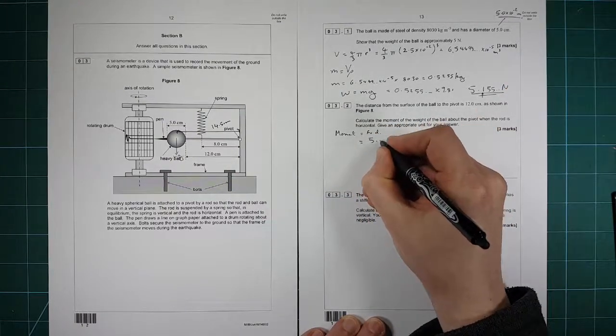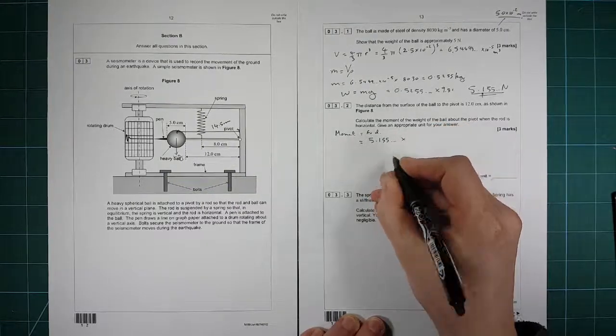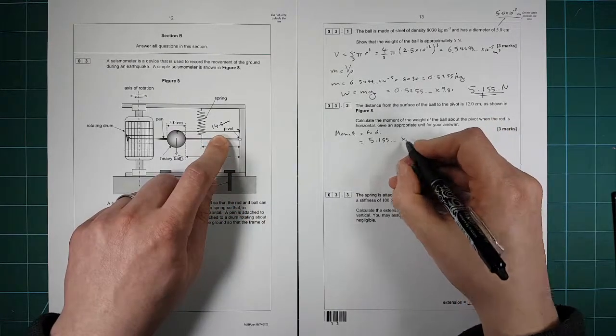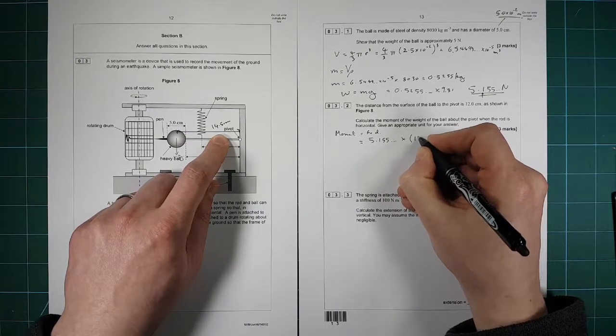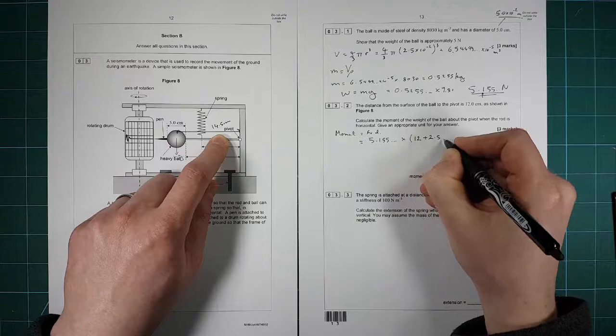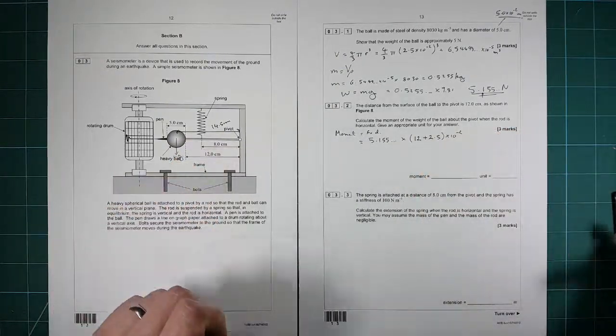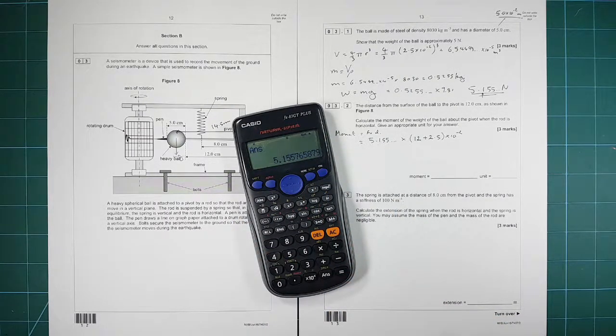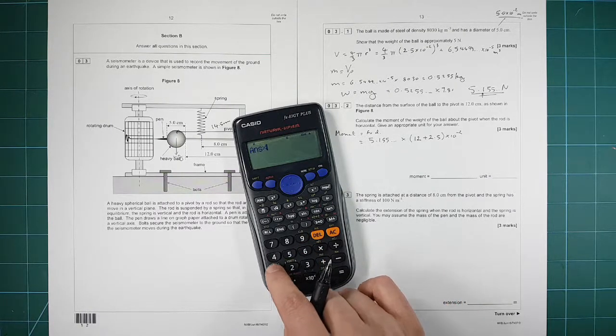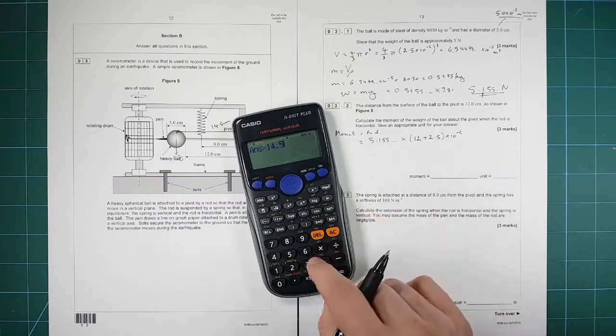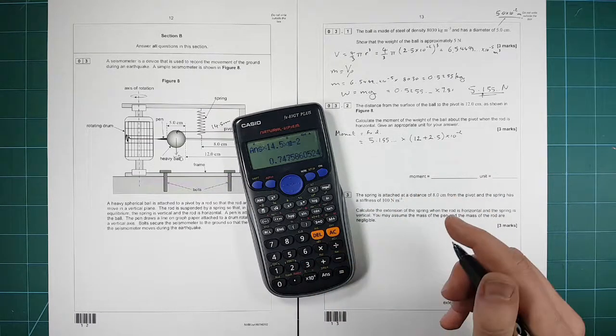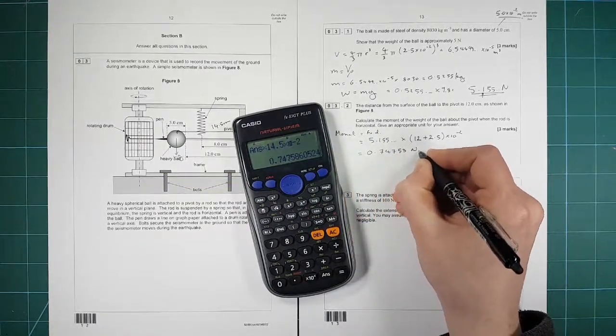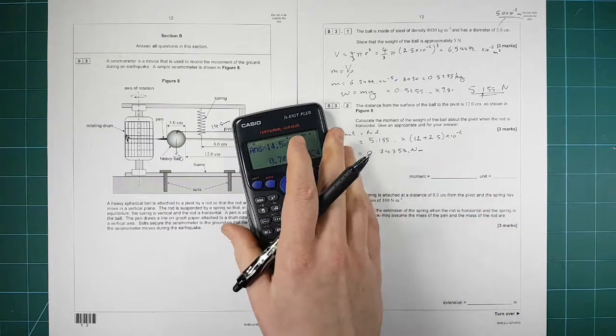The force is the weight, so that's 5.155 dot dot dot times by the perpendicular distance to the pivot. Again, we want to convert it into meters because it will make everything easier if it's all in meters. So we've got 12 plus 2.5 all times 10 to the minus 2. So we need to times that by 14.5 times 10 to the minus 2.